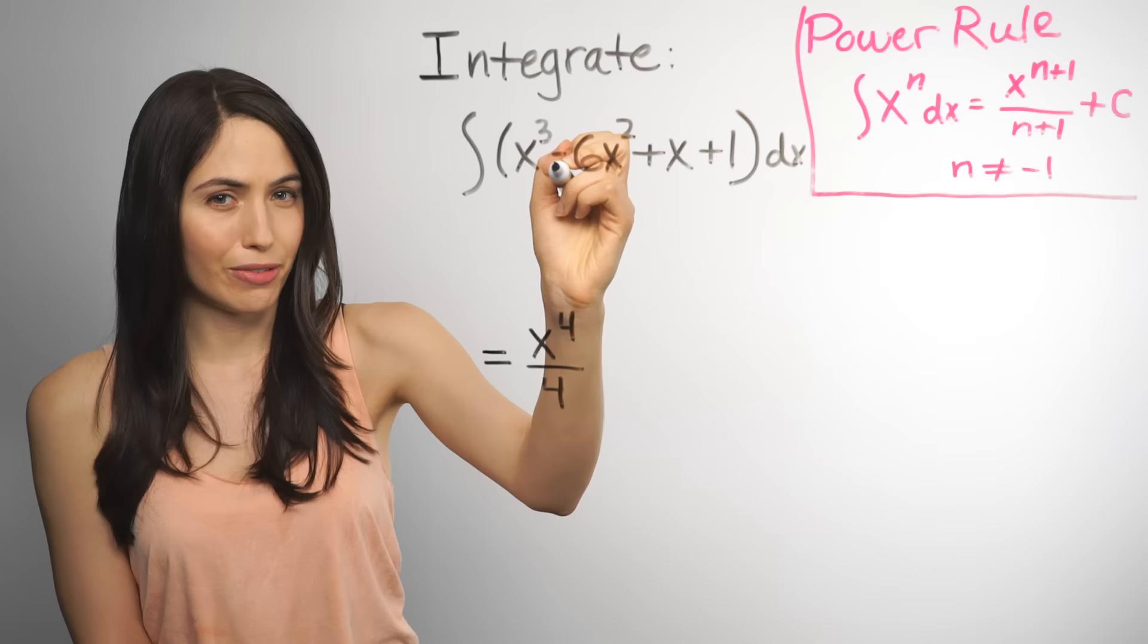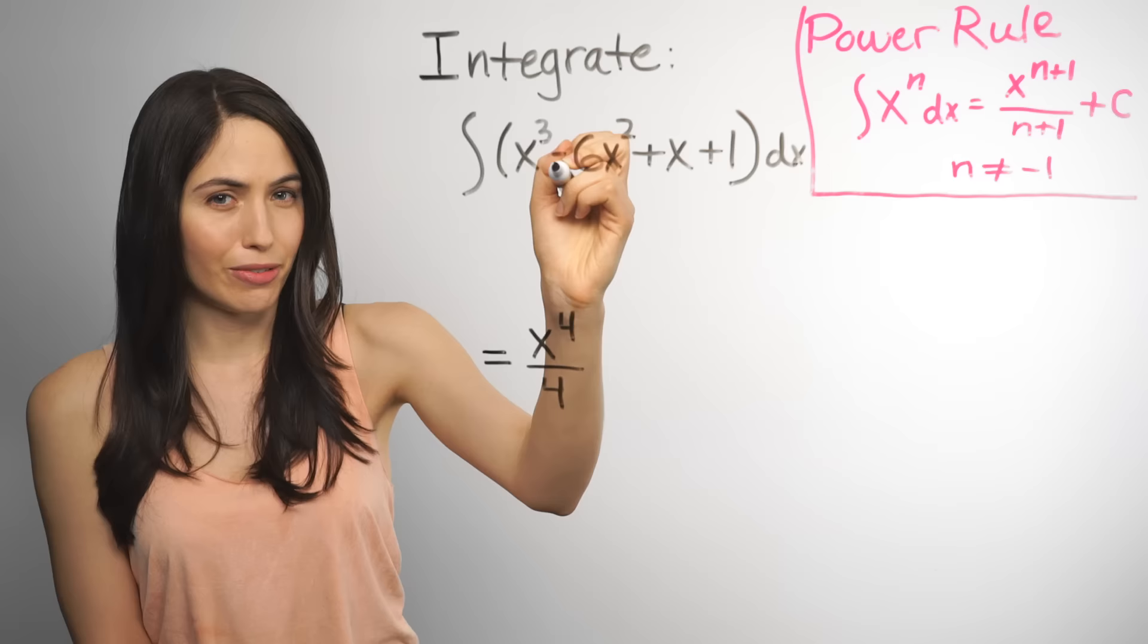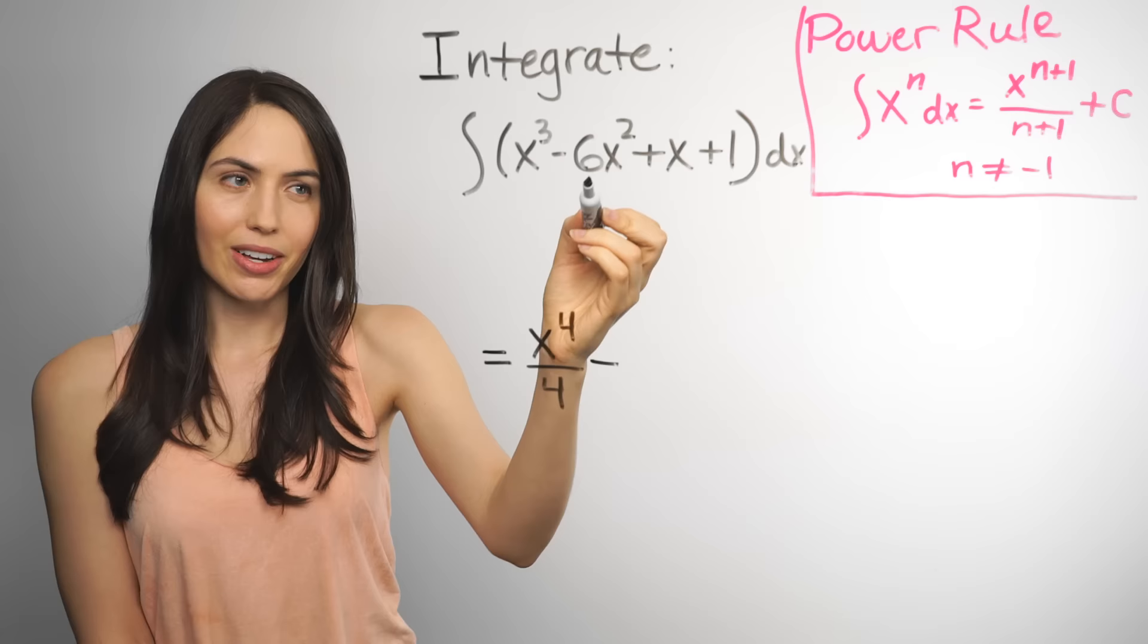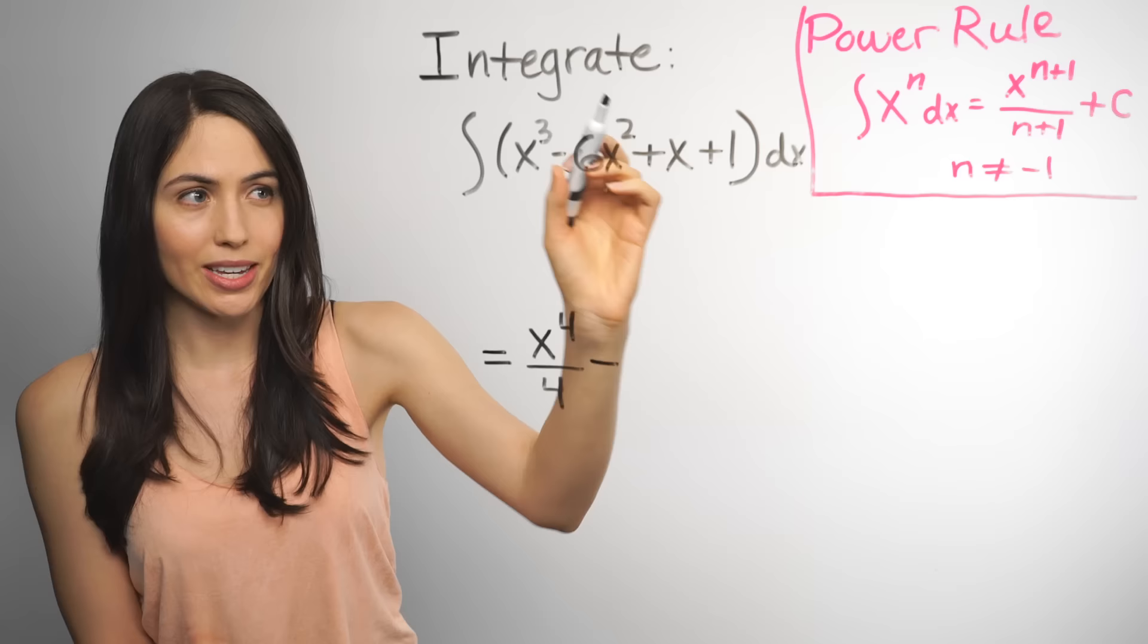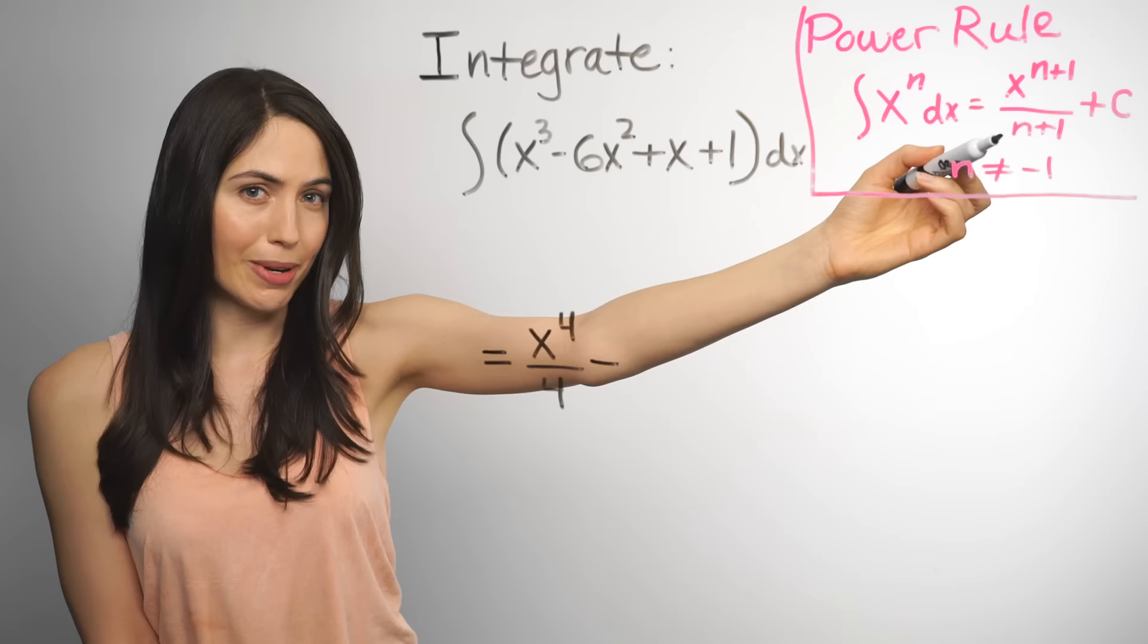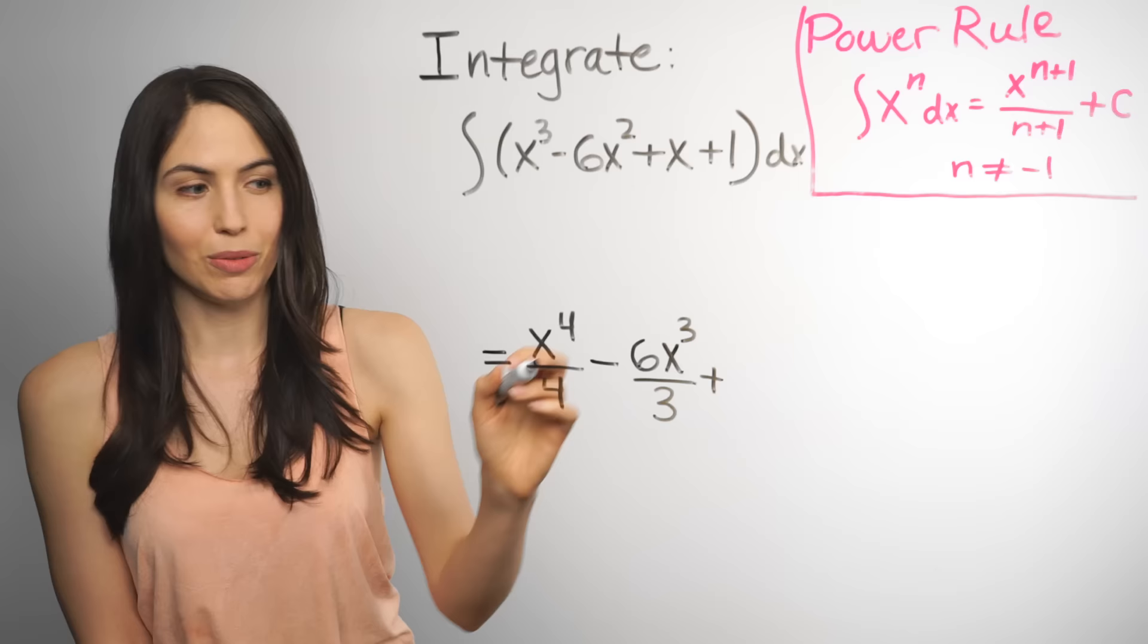And we can keep the subtraction here because of the sum and difference rules. This term also has an x power, but it also has this 6 multiplied out front. And any time you have a constant multiplied out front, you can keep the constant and then integrate the rest. So we can keep the 6 and then integrate x squared with the power rule. So instead of x to the second power, it's going to be x to the third divided by 3.